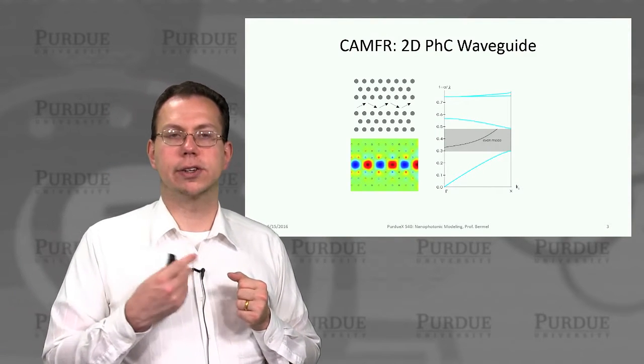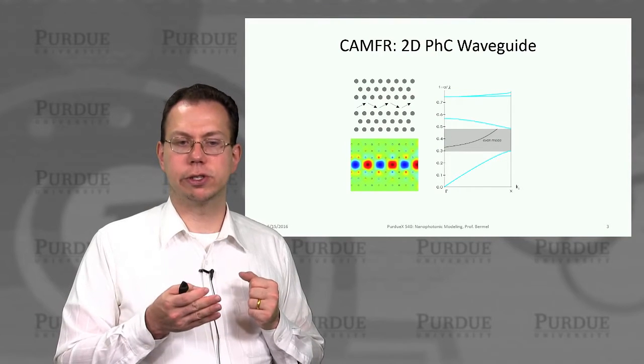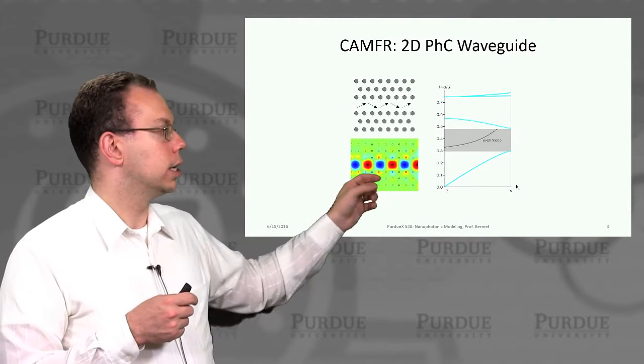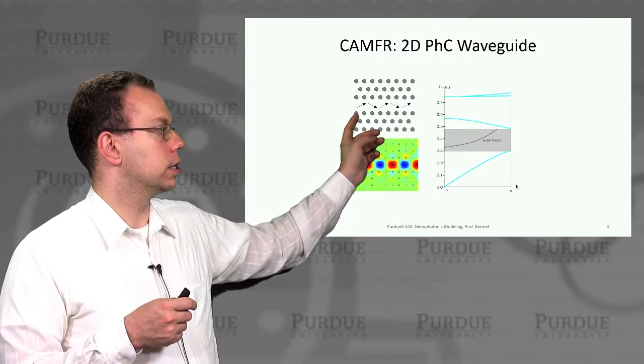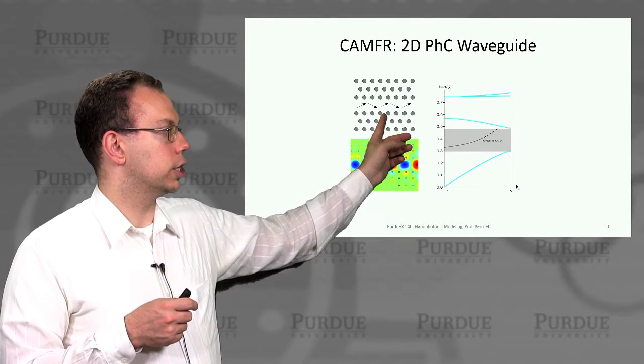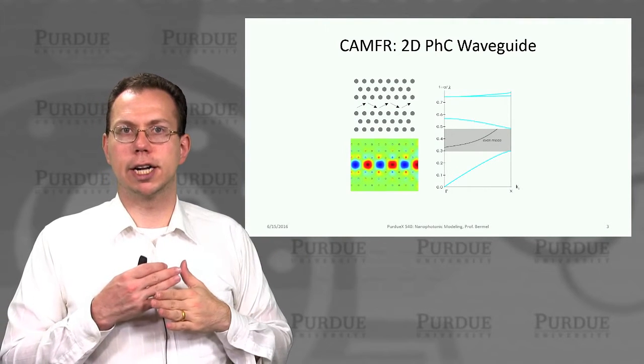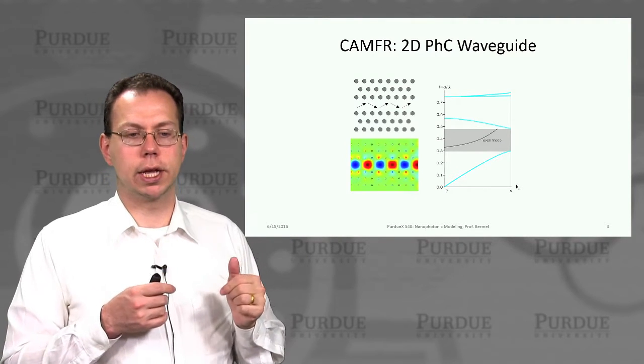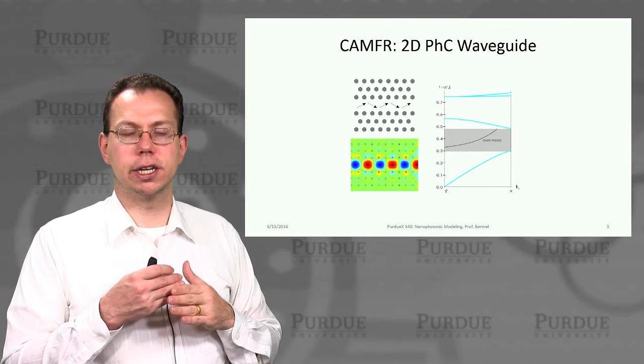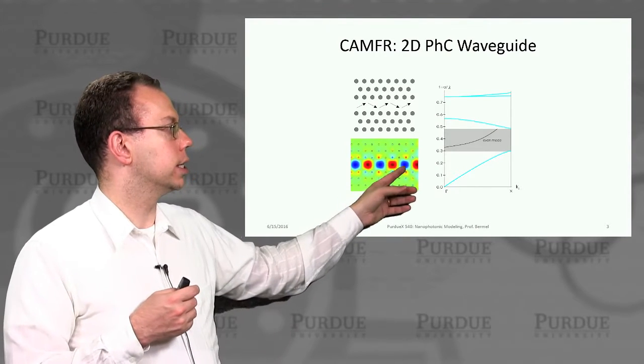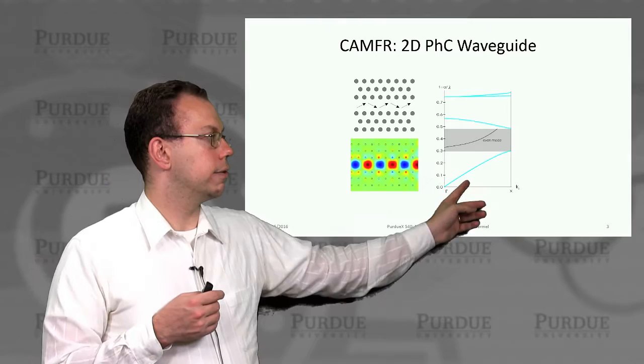And we don't necessarily have to limit ourselves to such a simple structure. We can also potentially have a photonic crystal 2D structure which has some sort of defect or a lack of rods in one region. And then that can form a defect waveguide.